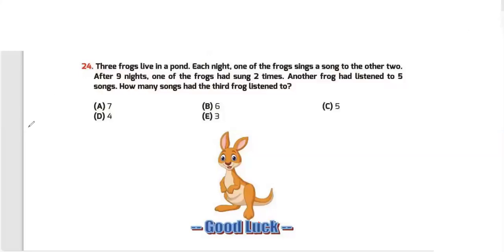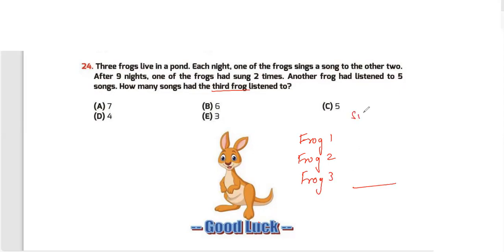Question 24: Three frogs live in a pond. Each night one frog sings a song to the other two. After nine nights, one frog had sung two times, another frog had listened to five songs. How many songs had the third frog listened to? There are nine total songs sung, one per night.